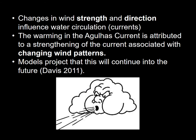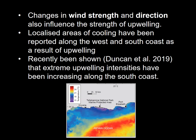Climate change also causes changes in wind strength and direction, which influences water circulation and currents. There's been warming in the Agulhas current, attributed to a strengthening of the current associated with changing wind patterns, and models predict that this will continue. Changes in wind strength and direction also influence the strength of upwelling. Localized areas of cooling have been reported along the west and south coast as a result of upwelling, and extreme upwelling intensities have been increasing along the south coast. This figure shows how drastically temperatures drop close inshore relative to those recorded further offshore during an upwelling event.